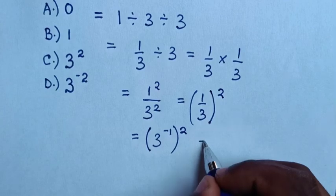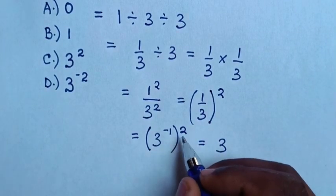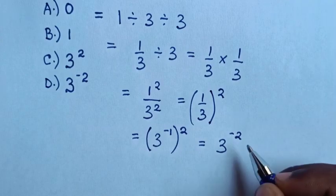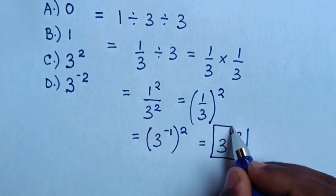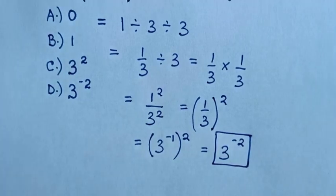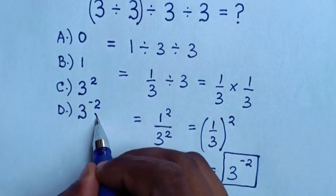Then it will be equal to 3 power of negative 1 times 2 is power of negative 2. So 3 power of negative 2 is our final answer. Selecting the match for choice, it is D.